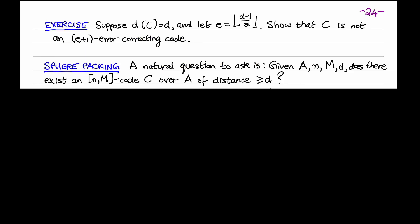A natural question to ask is about the existence of codes with certain parameters. More precisely, suppose we're given an alphabet A of size Q, the desired length N of codewords, the desired number of codewords M, and the desired distance D. One can ask: does there exist an N, M block code over A of distance at least D? This is useful because D determines the error-correcting capability, and the parameters N, M, and Q determine the information rate of the code. Given an alphabet A of size Q and code length N, we want to find a code with as large an M and D as possible, for maximum information rate and maximum error-correcting capability.